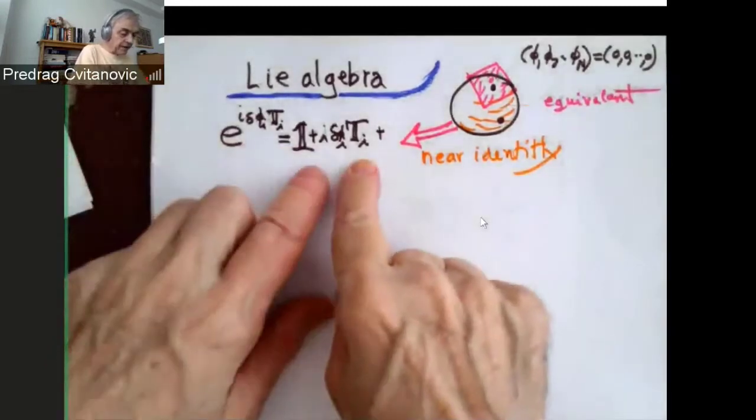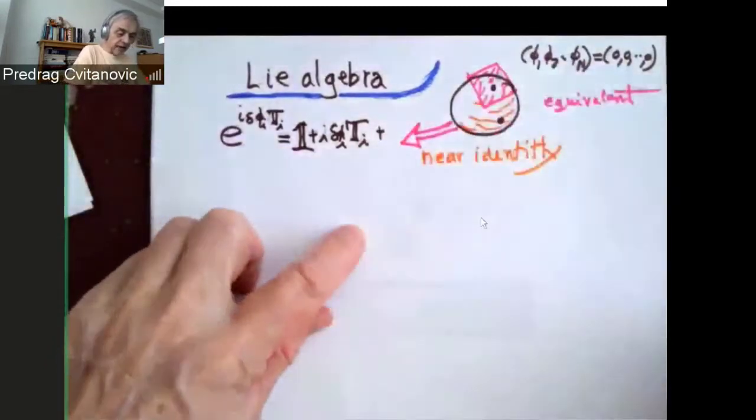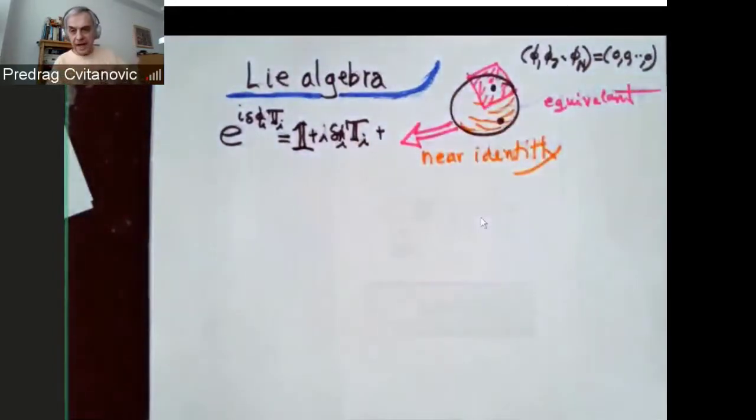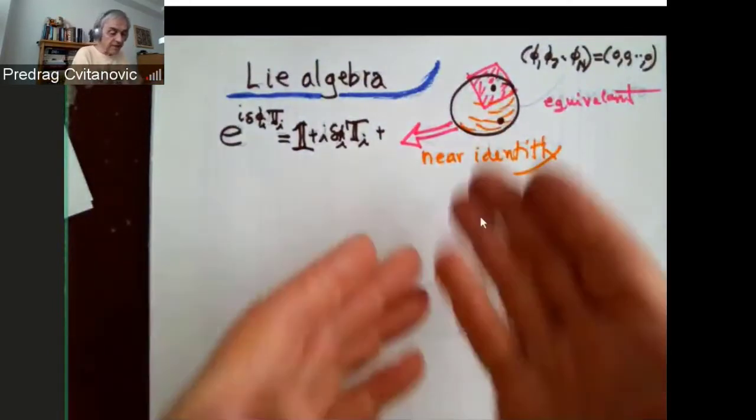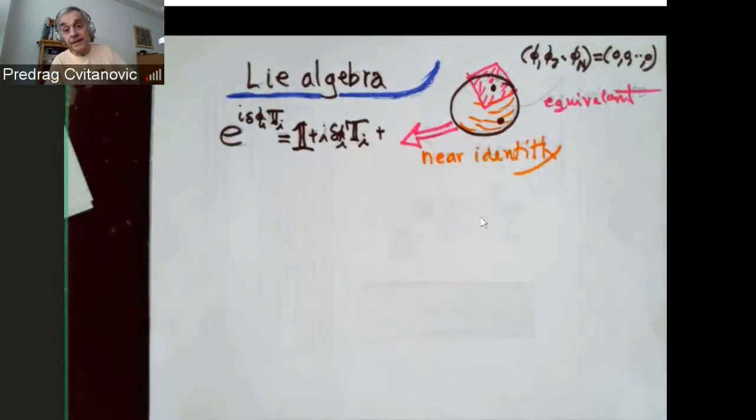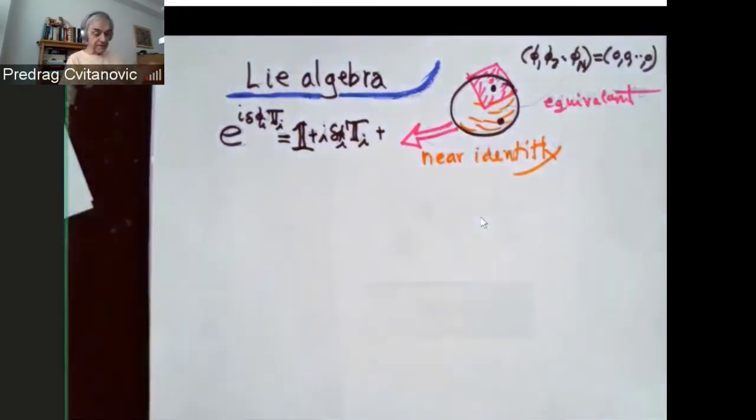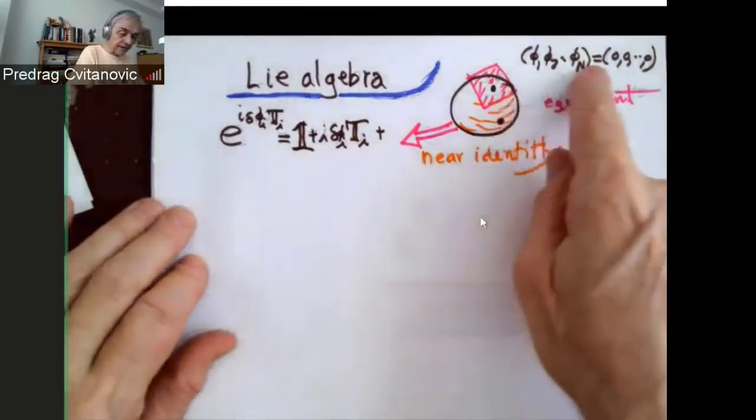Now, every little step is a tangent space. So there is a group space, which is parametrized by these angles that we have, for example, three angles. And they're compact and periodic, so it's something like a sphere or a torus, some smooth surface on which these parameters live.